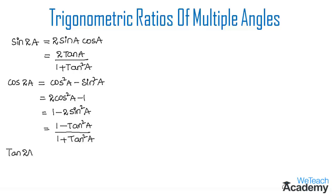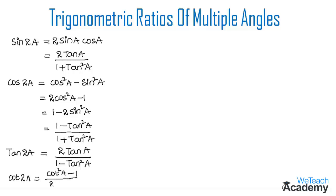Tan 2A is equal to 2 tan A divided by 1 minus tan square A. Cot 2A is equal to cot square A minus 1 divided by 2 cot A. Now let us discuss formulas for the multiple angle 3A.